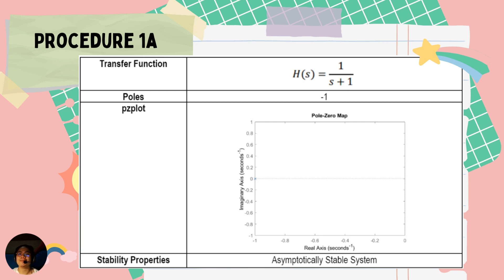For procedure 1a, we were given the transfer function H(s) = 1/(s+1). We have a pole at negative 1, and here is the PZ plot wherein the pole is located at the left half plane, meaning it is an asymptotically stable system.